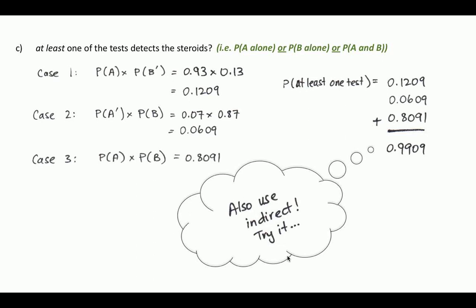We'll leave this for you to try on your own using an indirect method. What's the probability of case one plus case two plus case three plus the undesirable case? It should all add up to one. Try this using an indirect method, and our hint is to consider part A of this example — the probability that neither test detects steroids — and see what you get.